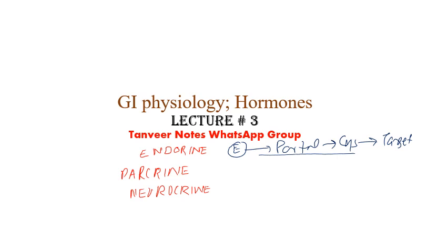Paracrine hormones, on the other hand, are also secreted by endocrine cells. However, instead of following through the portal and systemic circulation, they use diffusion — they diffuse across a short distance and act directly on the target cells.